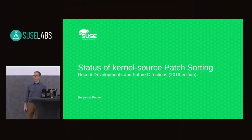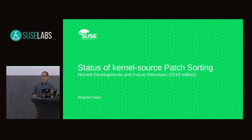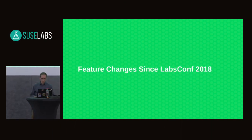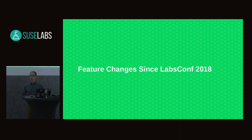Good morning, everyone. My name is Benjamin Poirier. I'm part of SUSE Labs, where I work mostly on network device drivers. Today I'm going to talk about the patch application order in SUSE's kernel repository, otherwise known as GitSort. This presentation is going to be a follow-up to a similar presentation I gave last year, and I'm going to talk about the changes that happened to GitSort since LabsConf 2018.